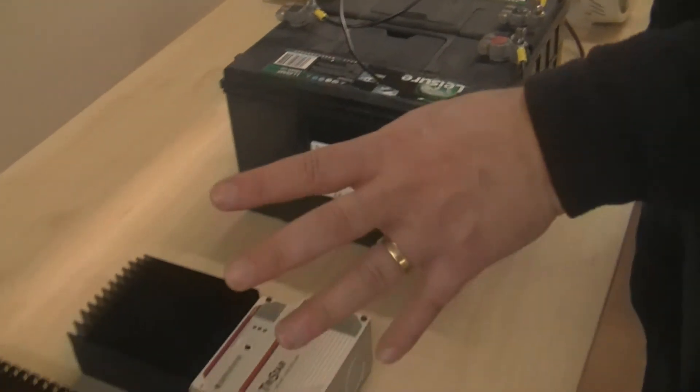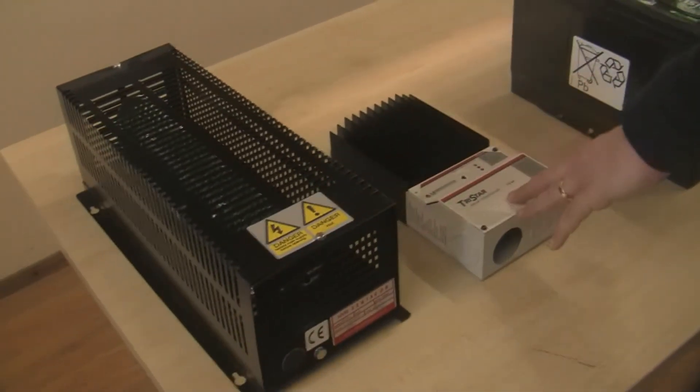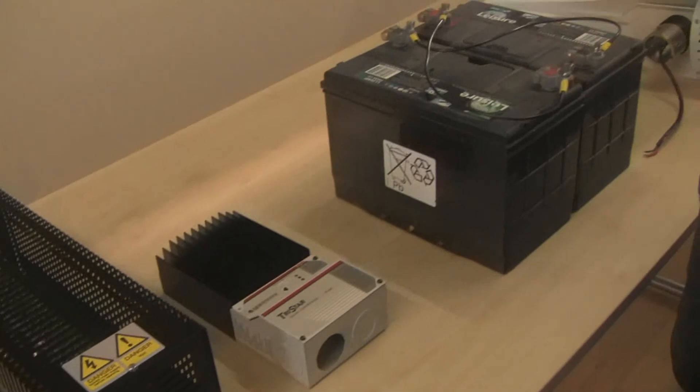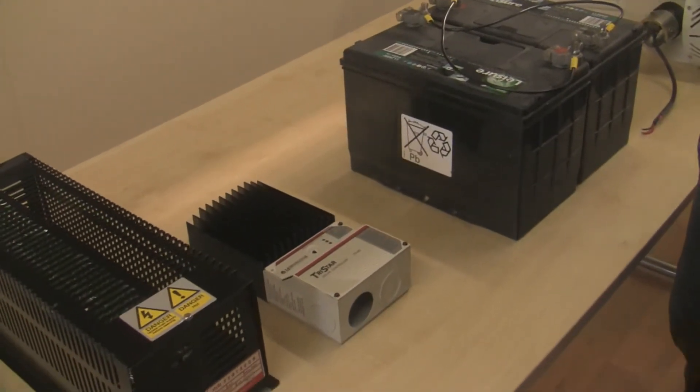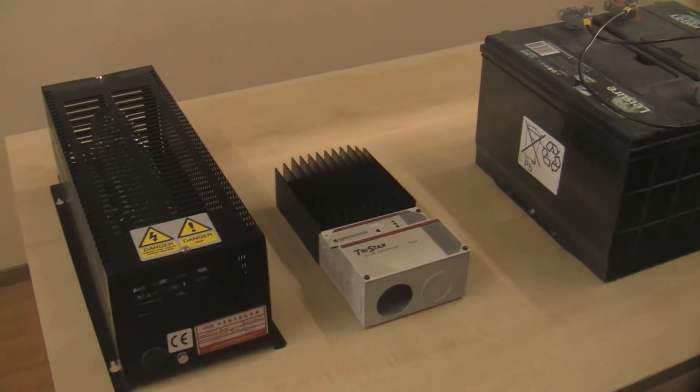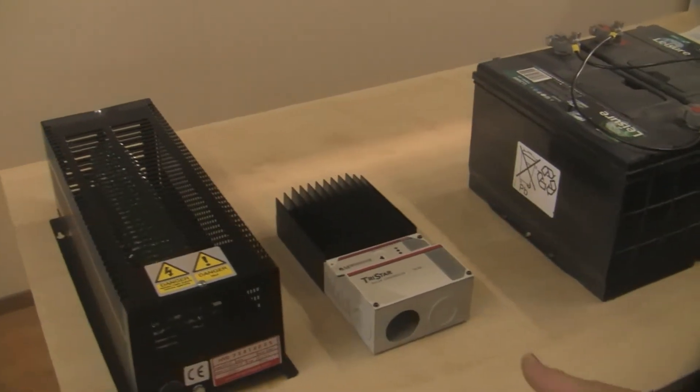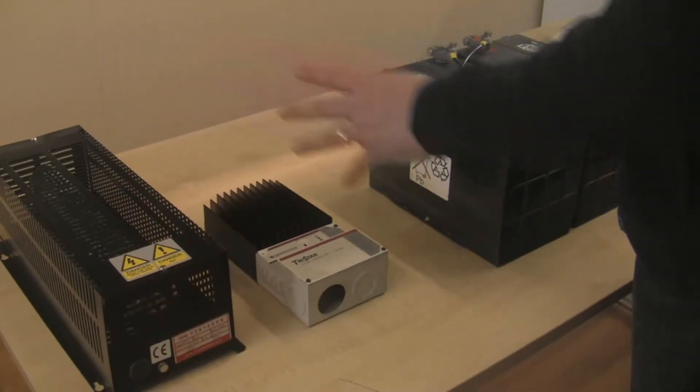The other thing I would say is usually you would already mount all of this equipment, so the dump load and the tri-star and the batteries would already be mounted on a suitable surface with a battery enclosure, perhaps on a nice metal control panel.